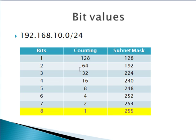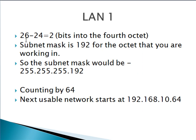So: 2 bits into the 4th octet, counting by 64, subnet mask of 192. The other 3 octets are covered by the /24. Your next usable network starts at 192.168.10.64. I didn't put any subnet mask notation here — that should help alleviate any kind of confusion.